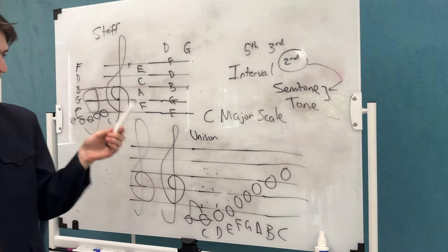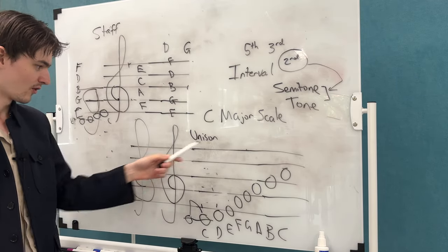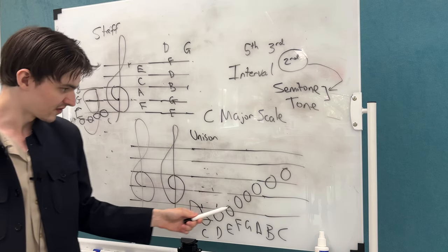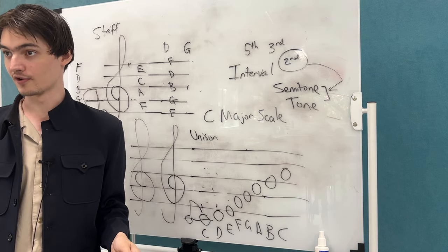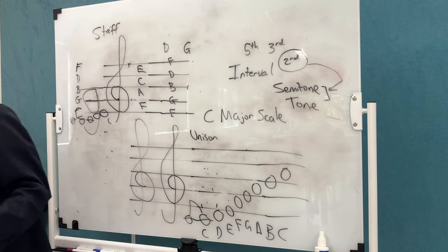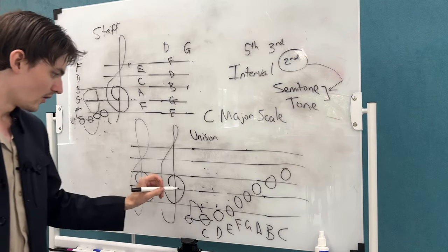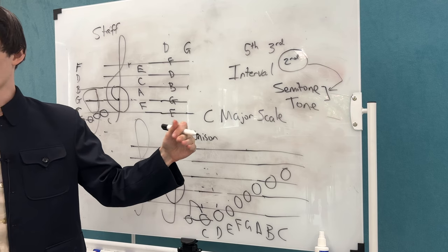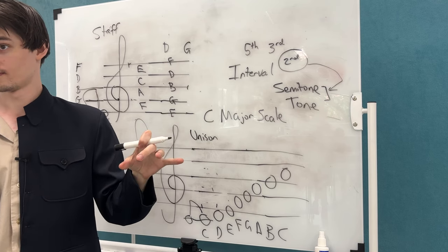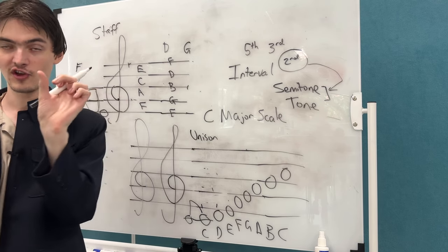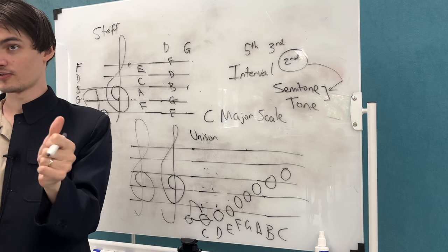But black notes, there aren't any black notes in the C major scale. So as we're going up this scale, we're skipping all of those black notes entirely. So essentially, if you skip a black note, you have a tone. But if you're just going between one note to the next, it's just a semitone.